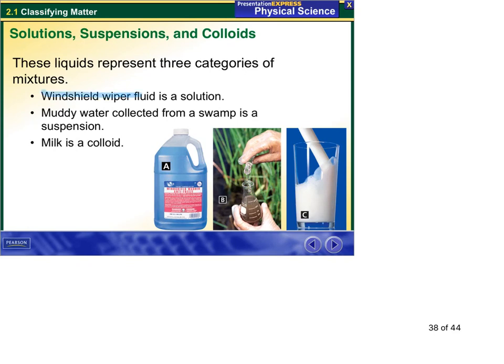So windshield wiper fluid: solution. Solutions, another way you can tell also, tend to be clear in nature. You can kind of see through them, where colloids and suspensions are more cloudy in nature, more difficult to see through, like muddy water, a suspension. And then the muddy water will separate out.